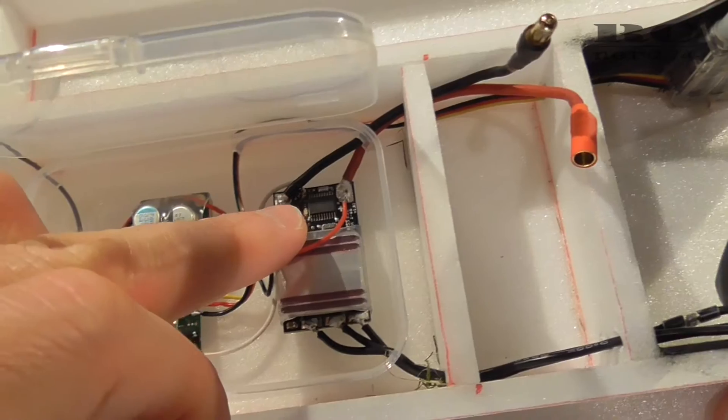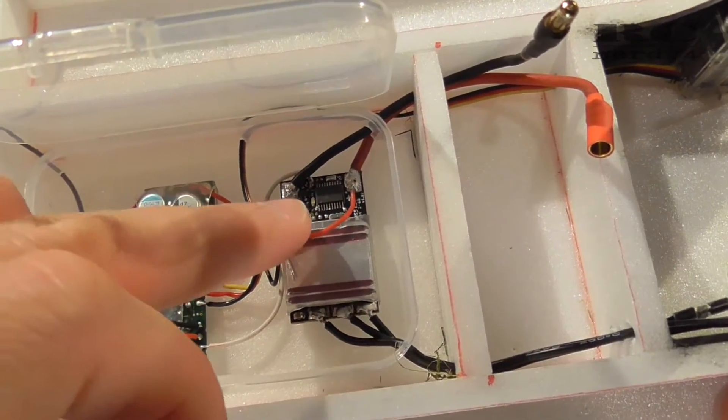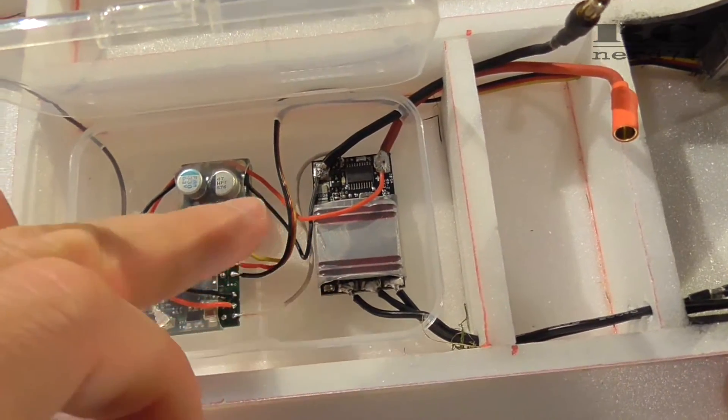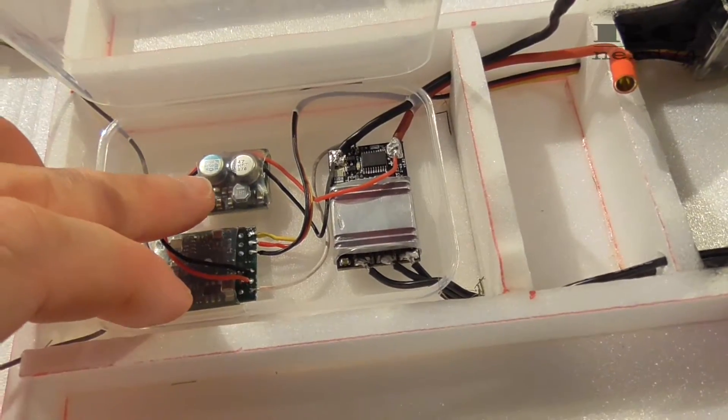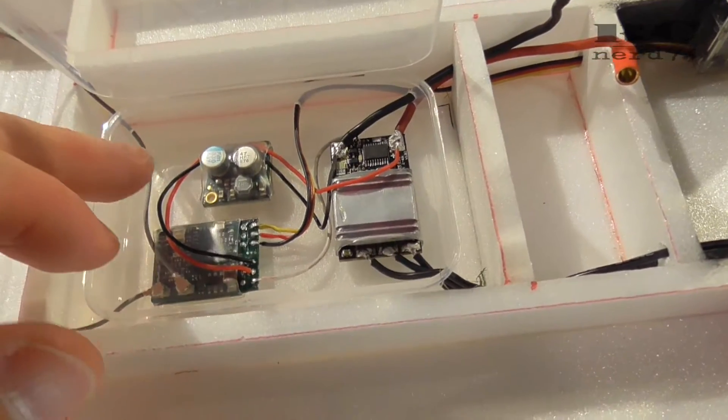We have power from the battery which goes to the ESC. From the ESC we have power which goes through the Pololu step down which transfers battery voltage down to 5 volts.